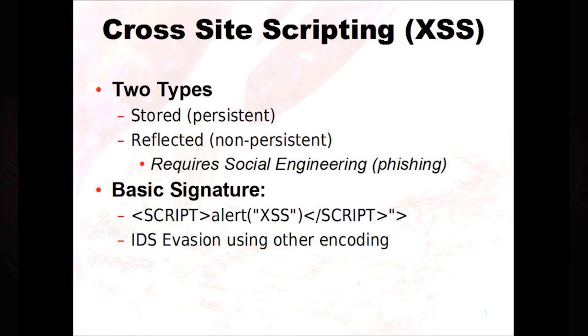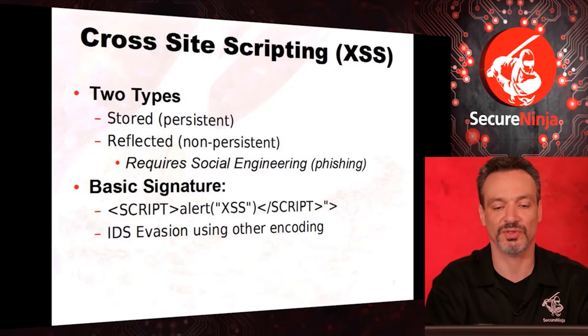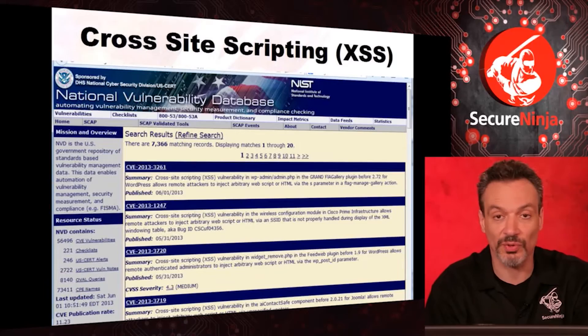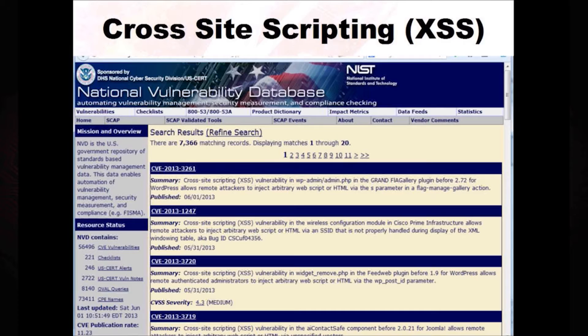Cross-site scripting: the two types. Stored — it's going to be there, it's persistent. Reflected or non-persistent requires social engineering — a phishing attack, a crafted email. The basic signature you'll see is when somebody's name field starts with 'script' and brackets — nobody's name starts with that. But they don't have to represent it that way; they can use hex encoding or all kinds of encoding schemes to evade IDSs. This morning I checked and there are 7,300 known cross-site scripting vulnerabilities — the last one discovered just yesterday.